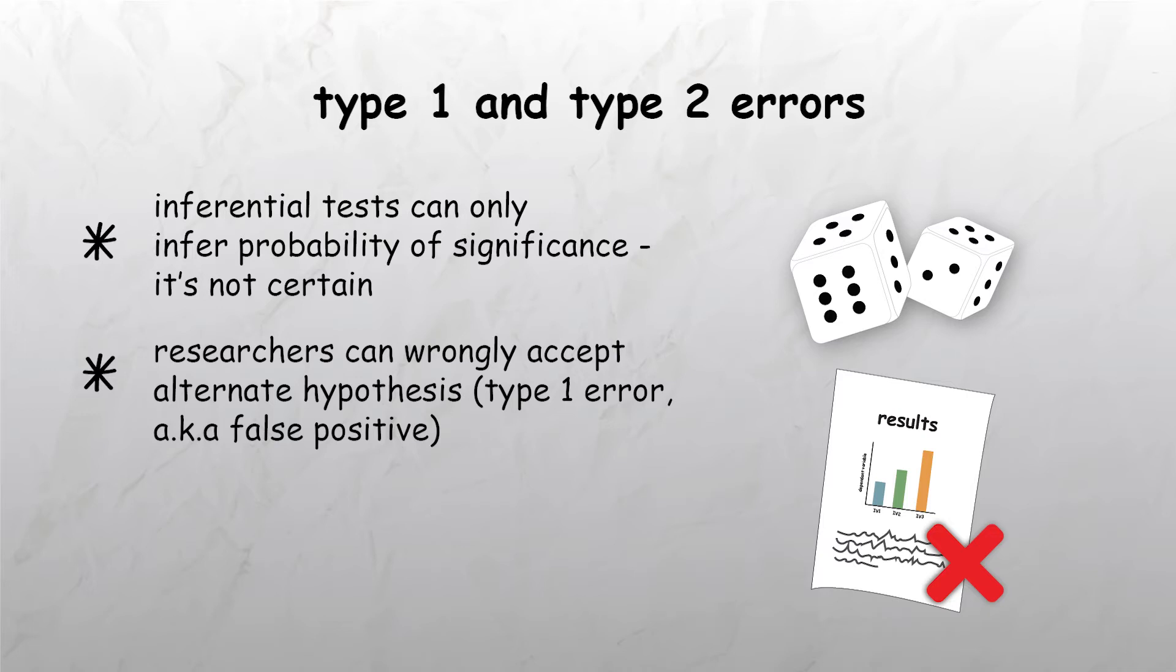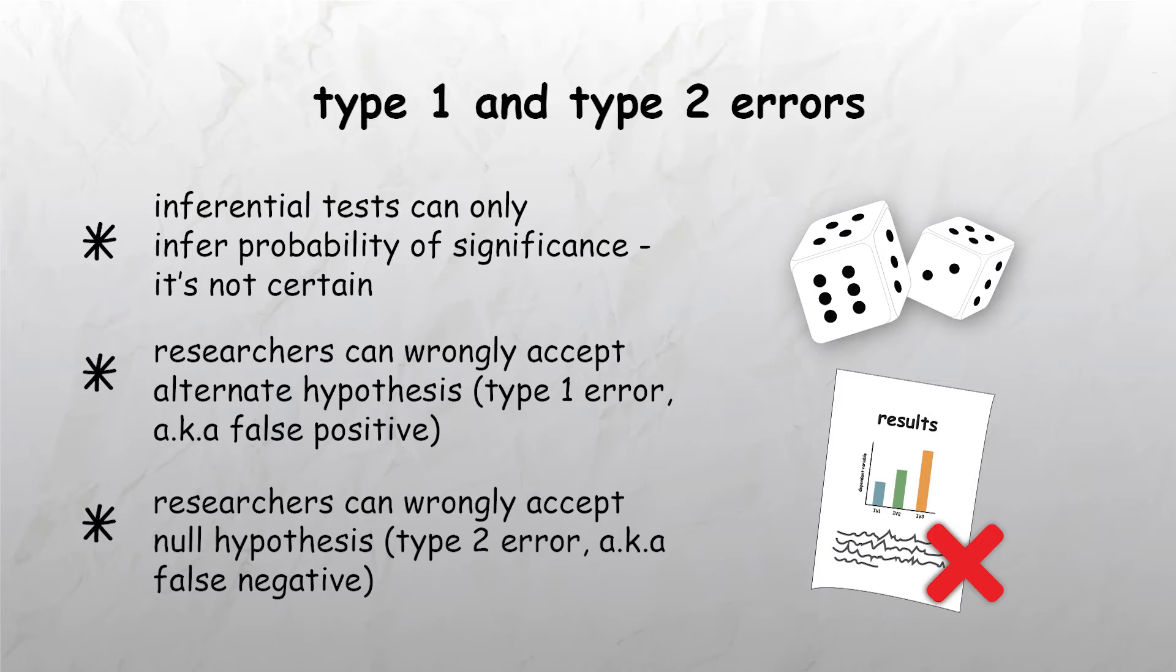Conversely, there may be times when researchers reject the alternate hypothesis and accept the null hypothesis when in fact the alternate hypothesis was true. This is called a false negative or a type 2 error.